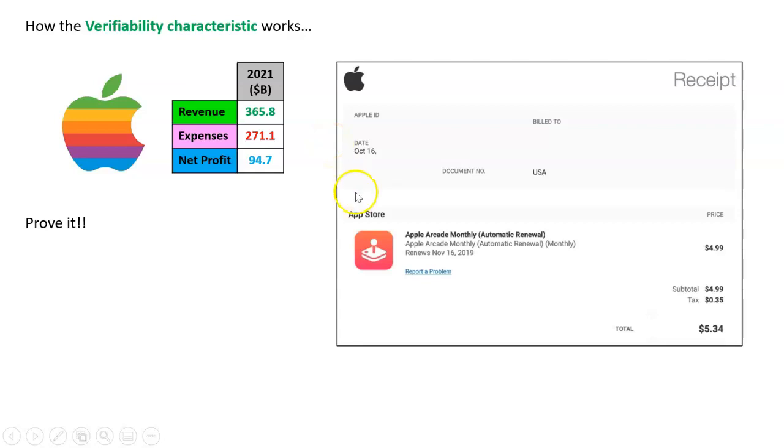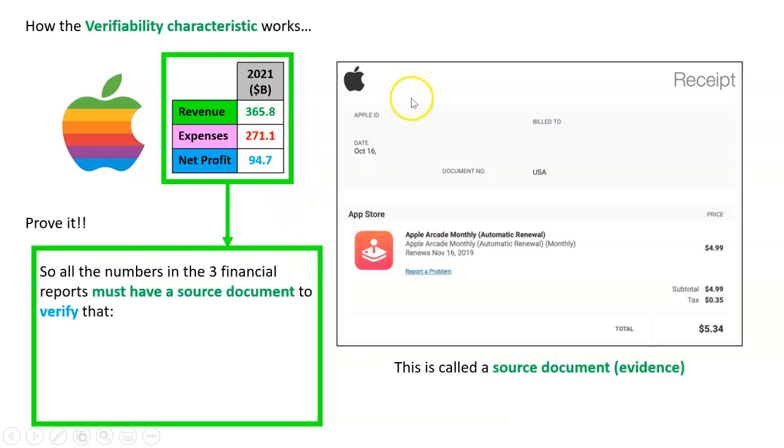How do they do that? Source documents, and this is just one, right? Someone got a receipt for an Apple RK monthly subscription for $5.34. That's called a source document. And when you think about it, these numbers here, as big as they are, are just made up of source documents. There will be a source document for all those numbers.